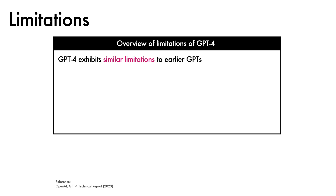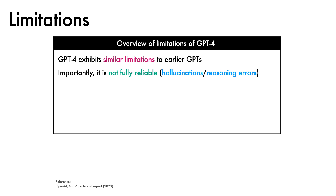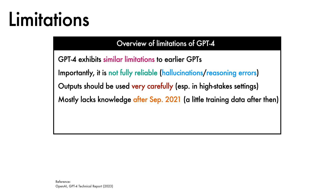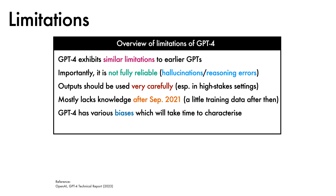While it demonstrates many capabilities, GPT-4 exhibits similar limitations to prior GPT models. Of particular importance, it is not fully reliable — it can hallucinate facts and make reasoning errors. For this reason, output should be used very carefully, especially in high-stakes settings. The model mostly lacks knowledge of events that occurred after September 2021. Though it has been trained on a small amount of data collected since then, GPT-4 also has various biases that will take time to characterise and mitigate.